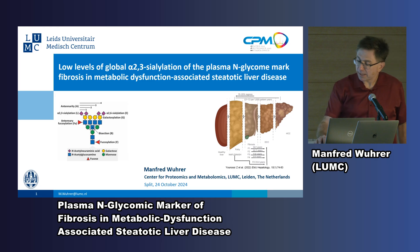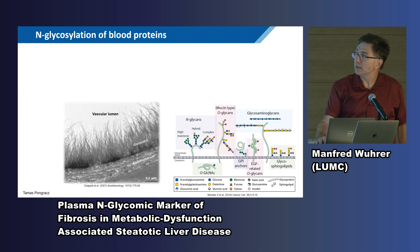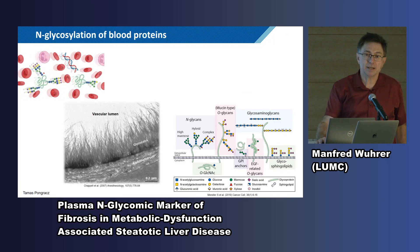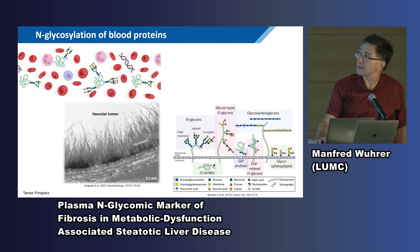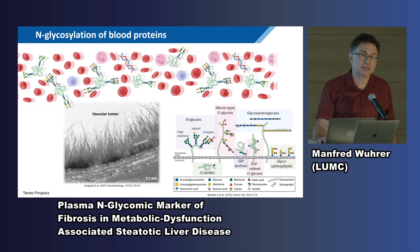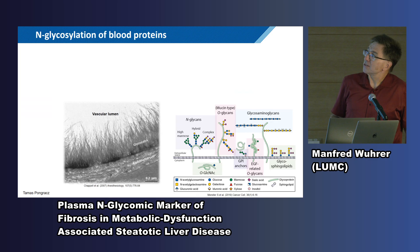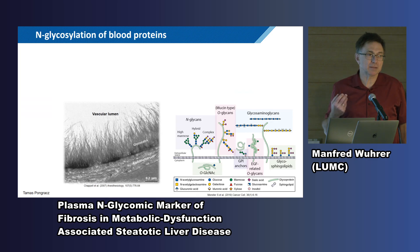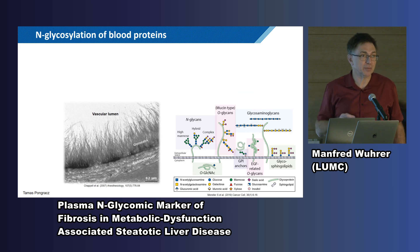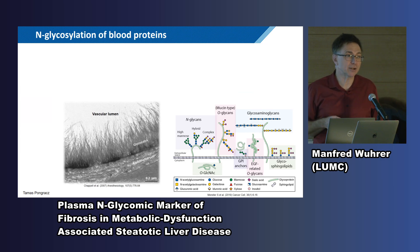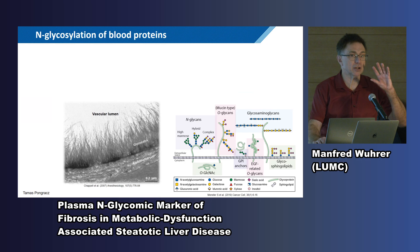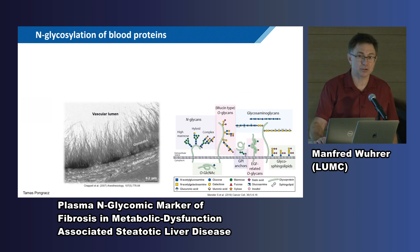We'll look at blood in this case, where the endothelium is covered with a glycocalyx. But also the content — the blood with its cells and proteins — is rich in glycans. The bulk of the glycans is not on the cells in the blood; the bulk of the N-glycans is really on the acute phase proteins and immunoglobulins, which are in serum and plasma. Those are the major contributors to the blood glycome.